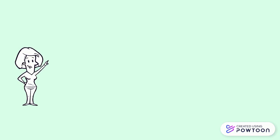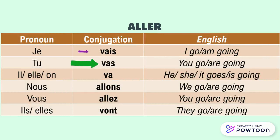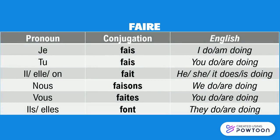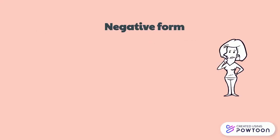Another important irregular verb is 'aller', which is deceptive because it looks like a regular verb but it's not. 'Aller' means to go. At the present tense: je vais, tu vas, il/elle/on va, nous allons, vous allez, ils/elles vont. 'Faire' (to do / to make) is also irregular. At the present tense: je fais, tu fais, il/elle/on fait, nous faisons, vous faites, ils/elles font.